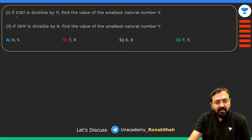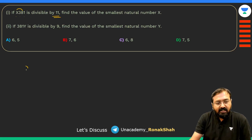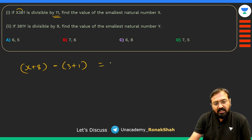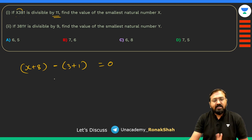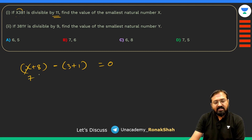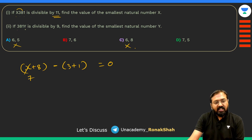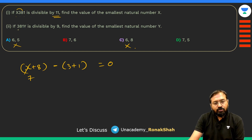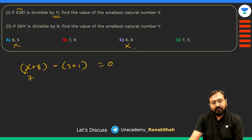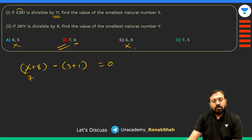For x381 divisible by 11: alternating digit sum x − 3 + 8 − 1 = x + 4 must equal 0 or 11. Setting x + 4 = 11 gives x = 7. For 381y divisible by 9: digit sum 3 + 8 + 1 + y = 12 + y must be a multiple of 9, so y = 6. Answer: x = 7 and y = 6.